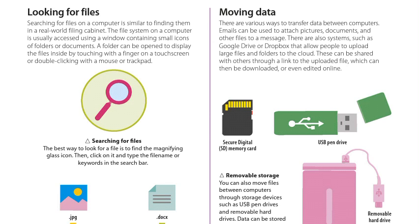Searching for files on a computer is similar to finding them in a real-world filing cabinet. The file system on a computer is usually accessed using a window containing small icons of folders or documents. A folder can be opened to display the files inside by touching with a finger on a touchscreen, or double-clicking with a mouse or trackpad.